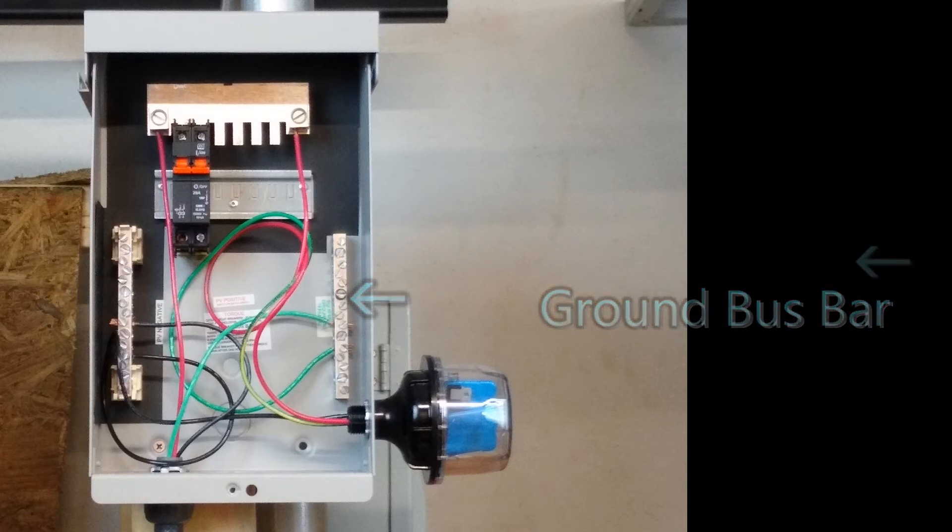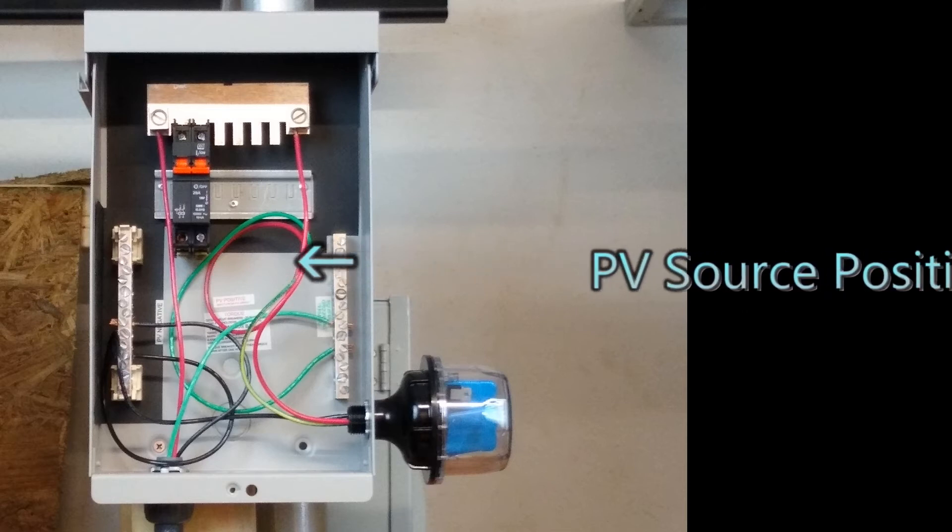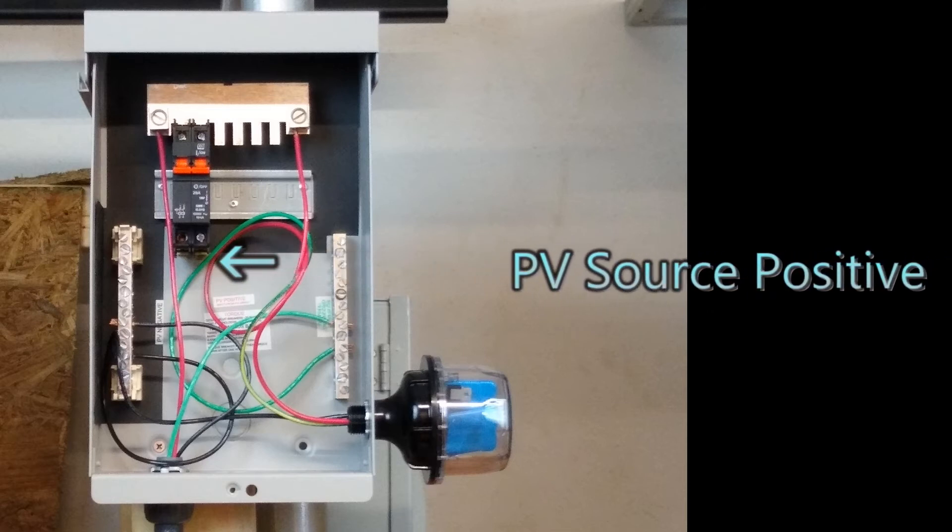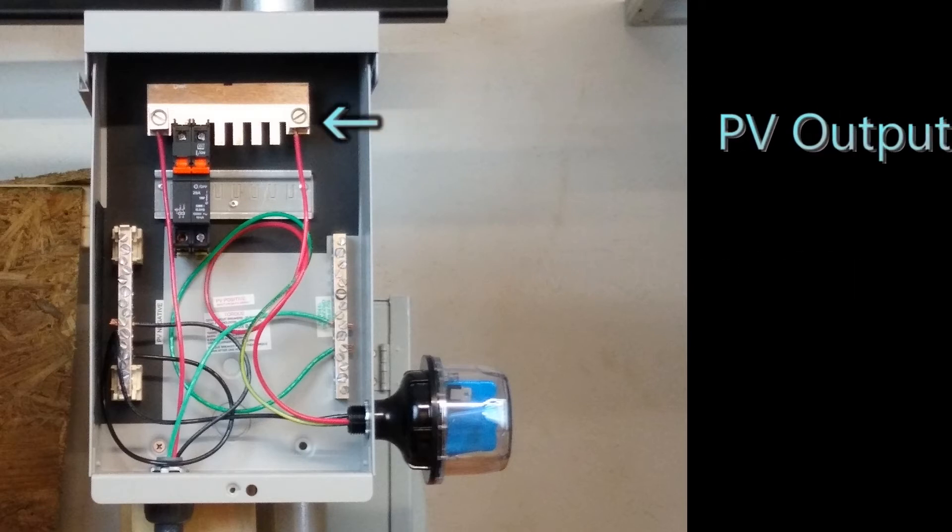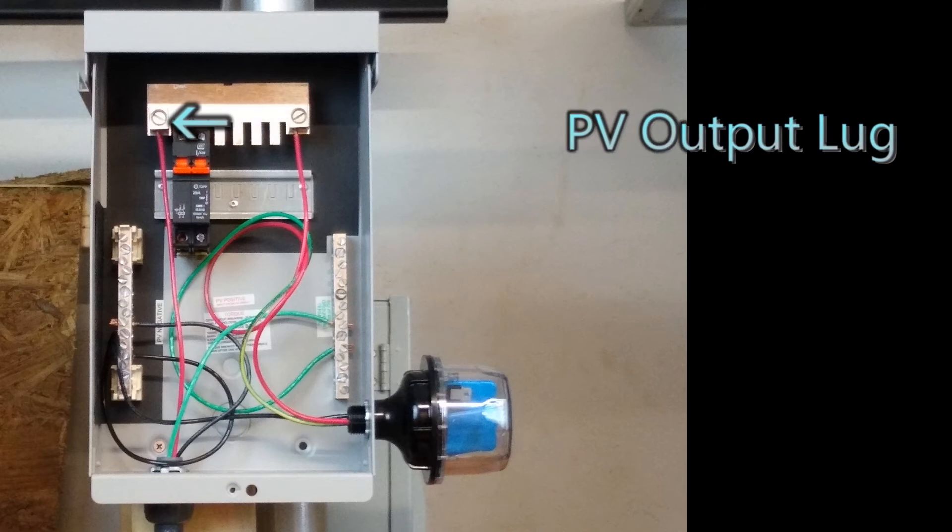You have a ground bus bar where all of the equipment grounding is going to be connected. Then you also have the PV source positives, which feed into the bottom of each of the breakers. Now this particular unit, it can accept up to six strings. There's a PV output lug, which will take all of those six strings and combine the voltage for an output positive circuit.